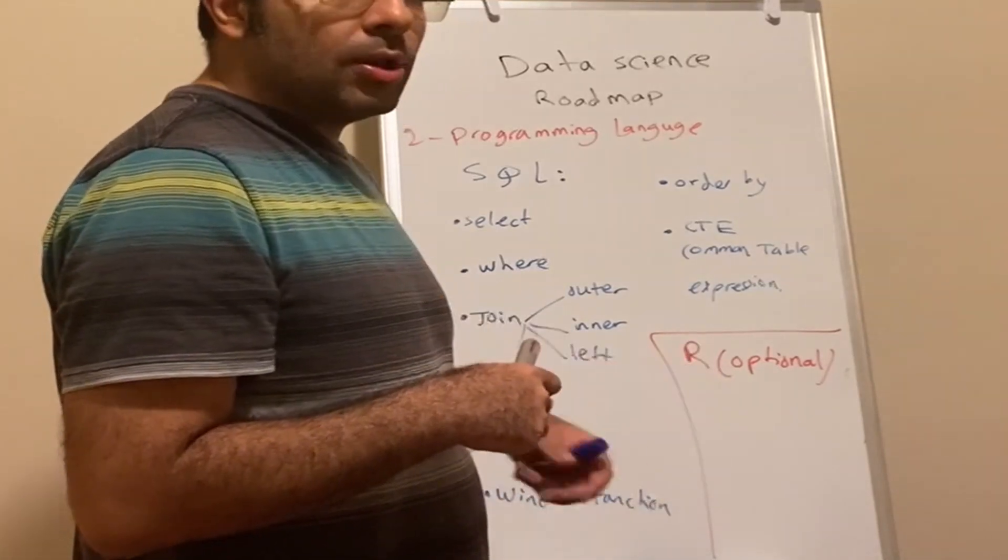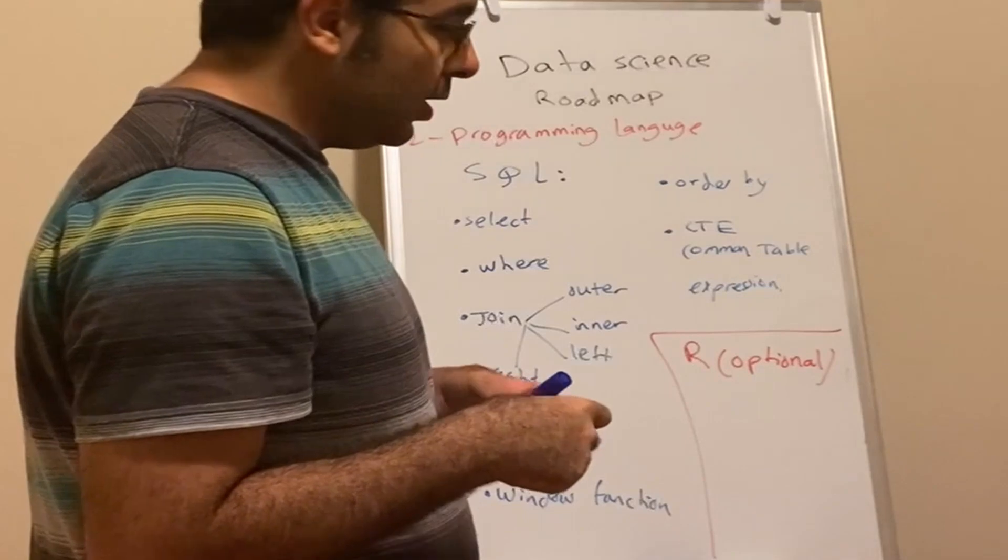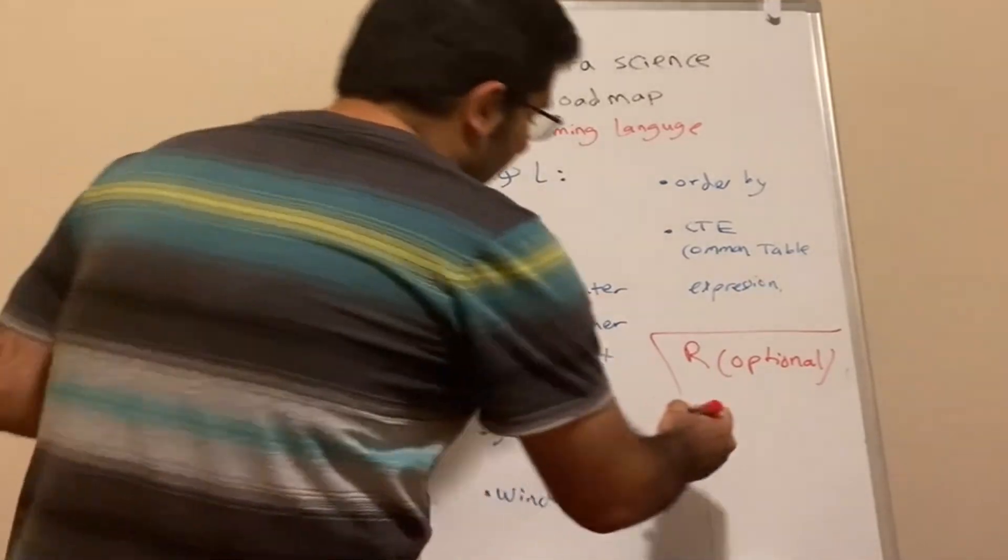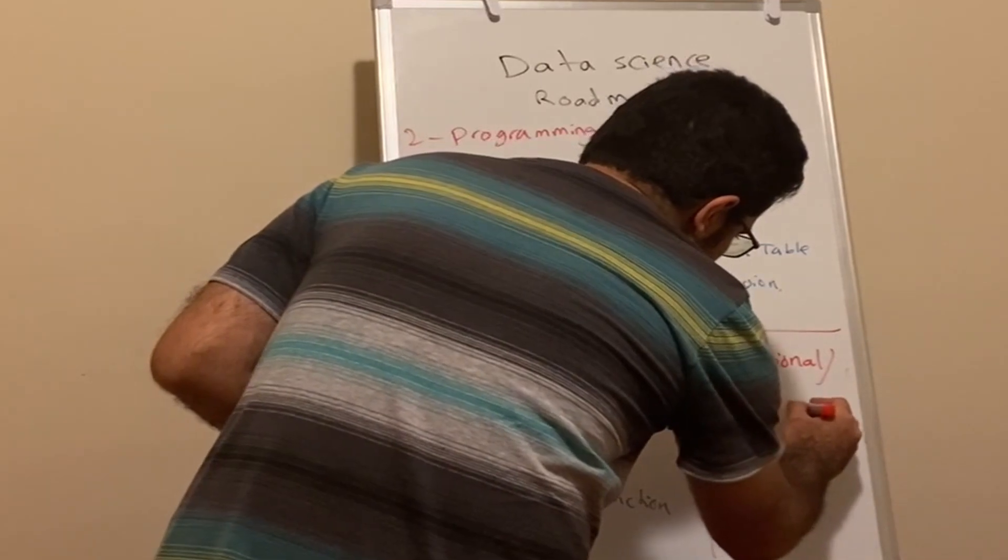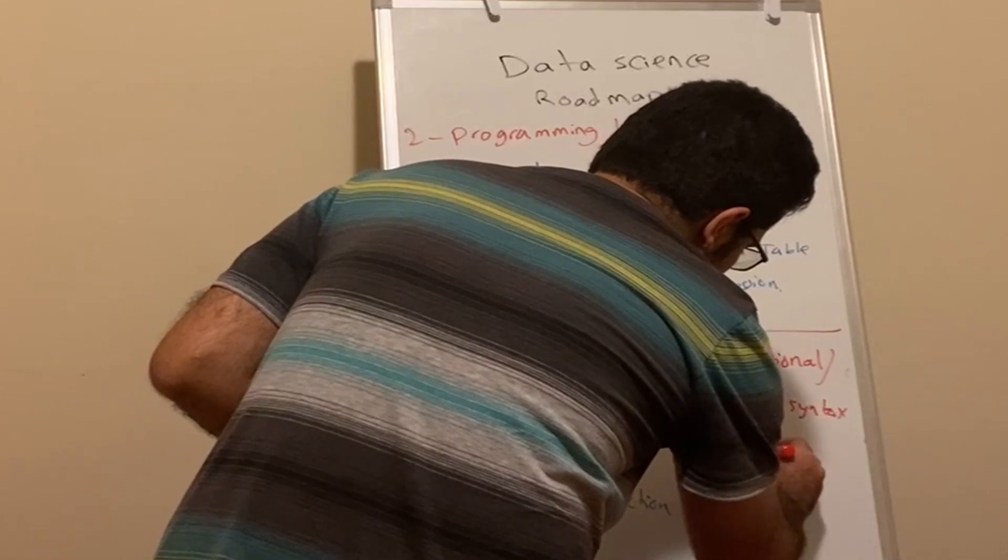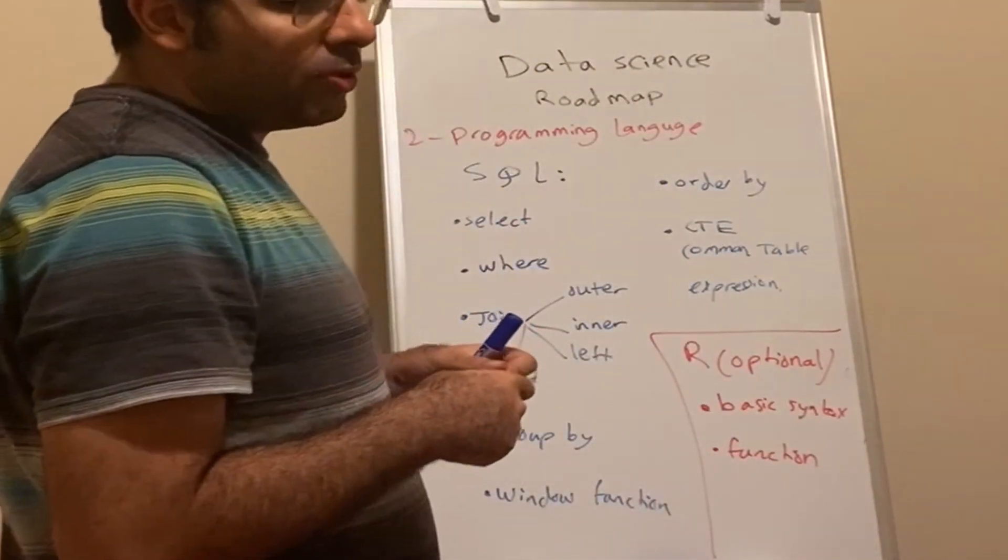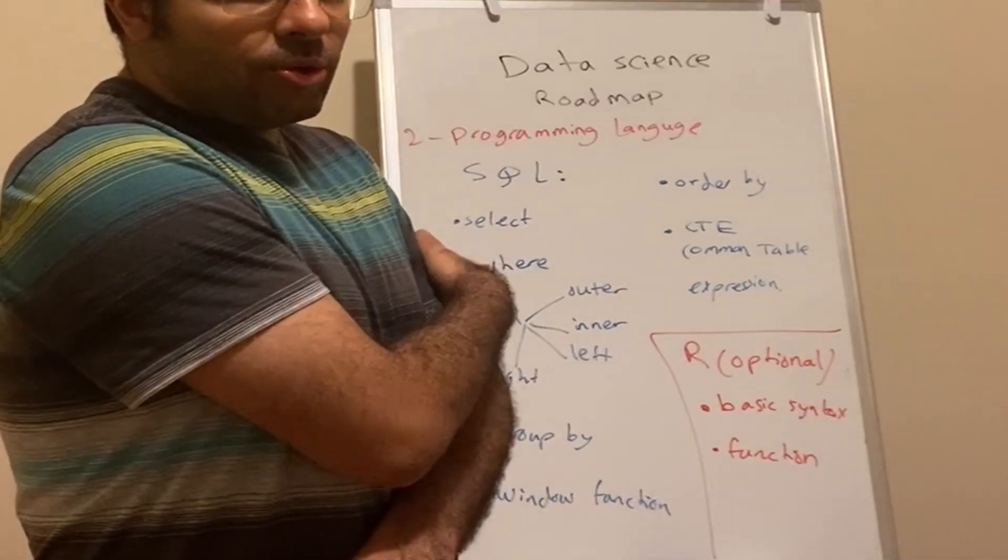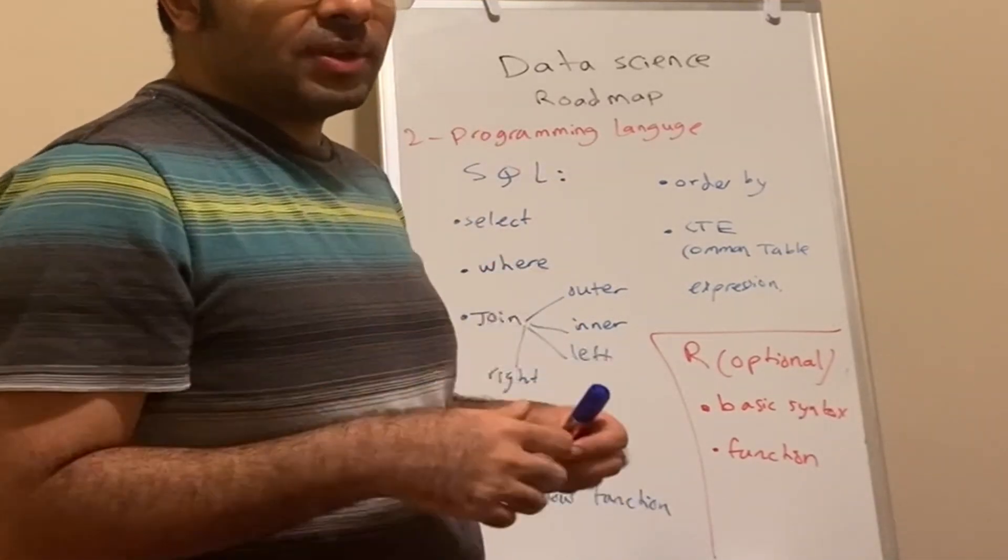When you want to productionize the model, you collaborate with software engineers as a data scientist or machine learning engineer. Software engineers do not use R. But if you want to decide to learn R in your career, learn the basic syntax, same as Python, and then learn to develop functions. R is not object-oriented programming - R is functional.